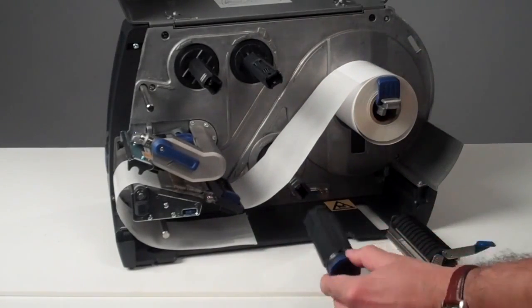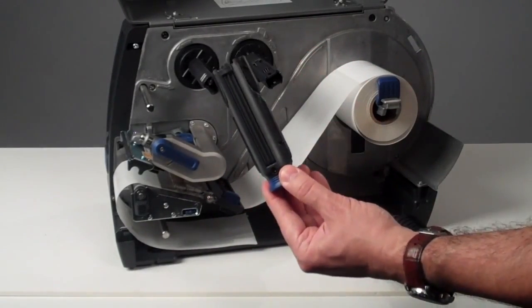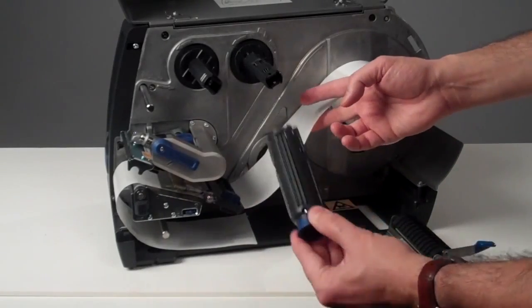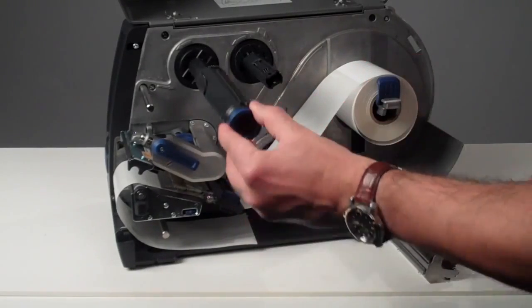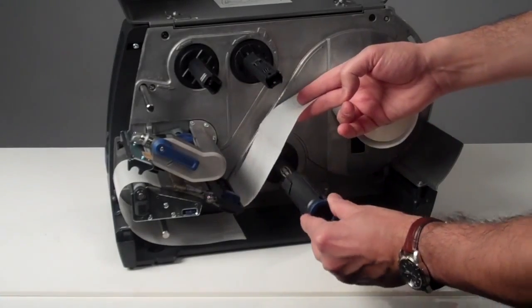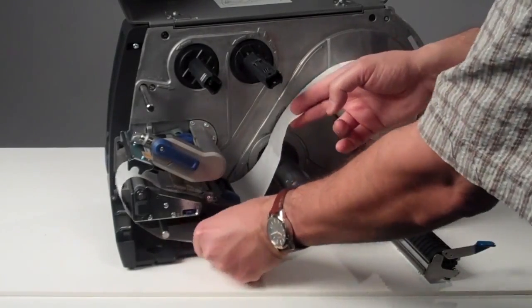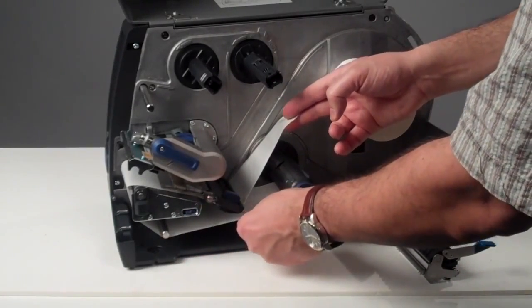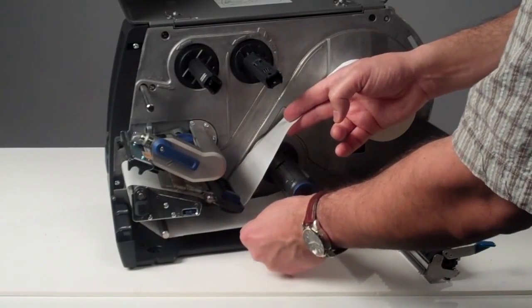The third way is to use the customer installable accessory collapsible core. The same collapsible core you can use for ribbon loading and for liner loading. Attaching the liner around it is very easy.